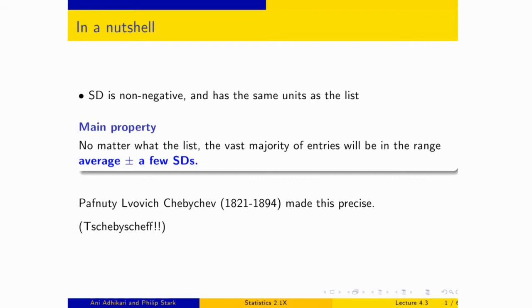Anyway, Chebyshev is the person who helped us understand why the SD is the thing to use. And here is his inequality.